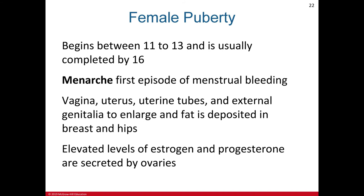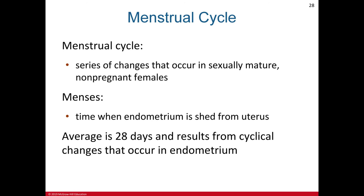Female puberty begins between 11 to 13 years old and is usually completed by age 16. The first episode of menstrual bleeding is called menarche. The vagina, uterus, uterine tubes, external genitalia, breasts, and hips begin to enlarge. Elevated levels of estrogen and progesterone are secreted by the ovaries, which can have positive or negative feedback effects on GnRH produced by the hypothalamus depending on the age of the female.